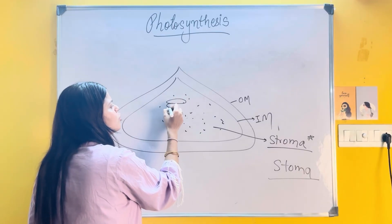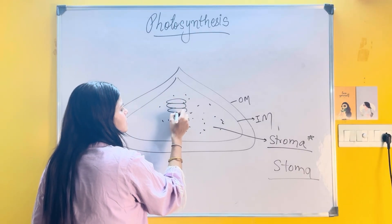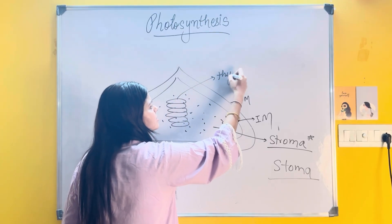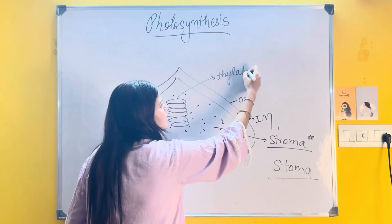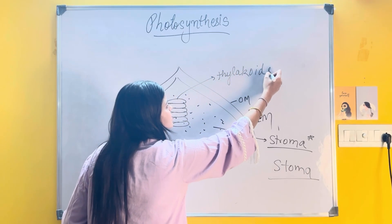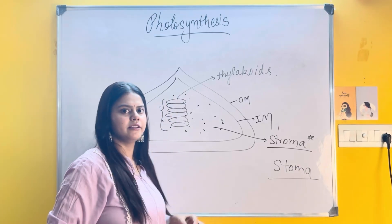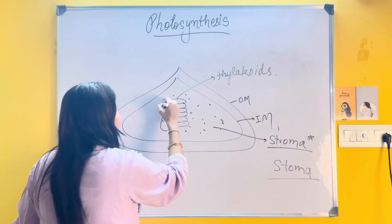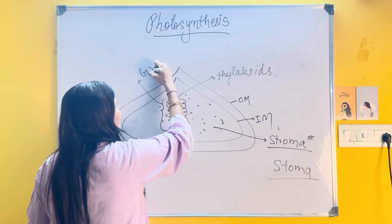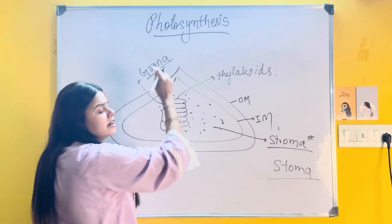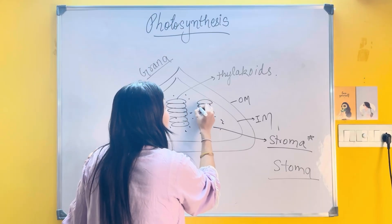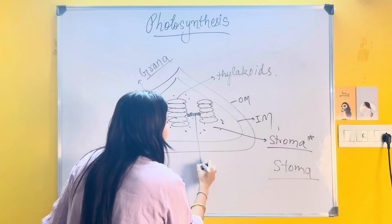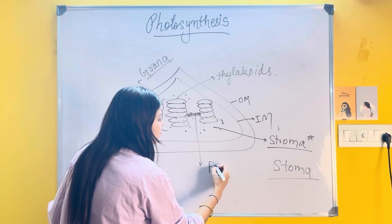Then you have coin-like structures in chloroplast. These coin-like structures are called thylakoids. The entire stack of thylakoids together is called grana. Two granas are interconnected with each other with the help of a bar. This bar is called a fret.